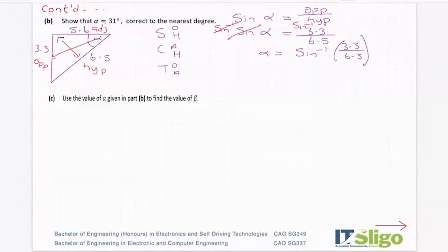So let's go the sine inverse of 3.3 over 6.5. Let me just do that. Sine inverse of 3.3 over 6.5. And I get 30.51 degrees. And then to the nearest degree, it's 31 degrees. Okay, so that's it with sine.